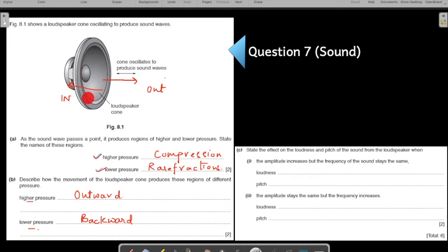Lower pressure when it moves backward. Why does it produce rarefaction when it moves backward? It is explained in the theory video. Because there is more space created, the air molecules get more space. They expand. It creates a less density region. Whereas when the cone moves outward, it pushes the air molecules together, creating a high density region which is called compression.